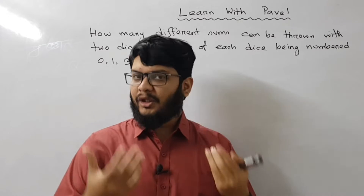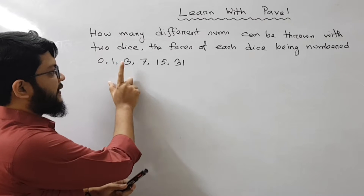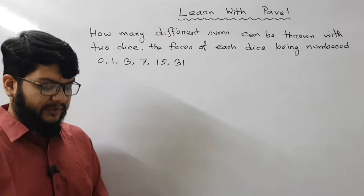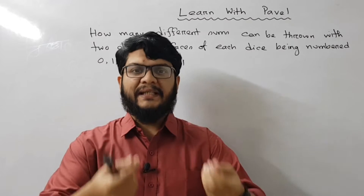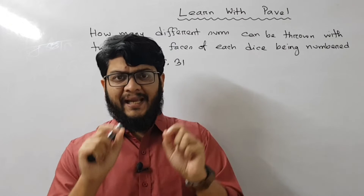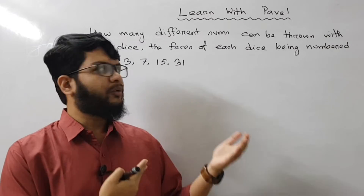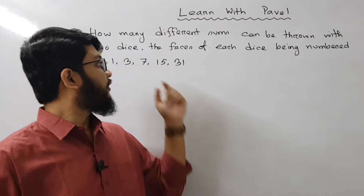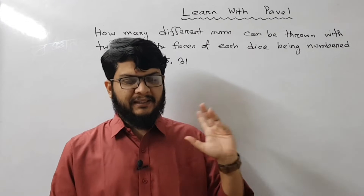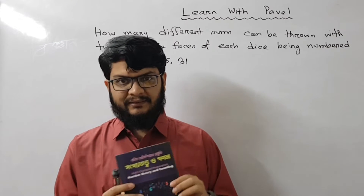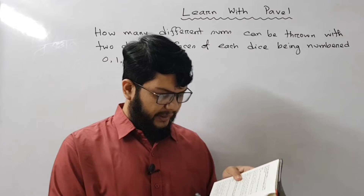Normally the dice is the same, but this is a special dice. The surfaces are 0, 1, 3, 7, 15, 31. The problem is that the two dice are the same, so we will add the two dice together. The first surface is the same and the second surface is the same. We will see the difference and add the numbers.